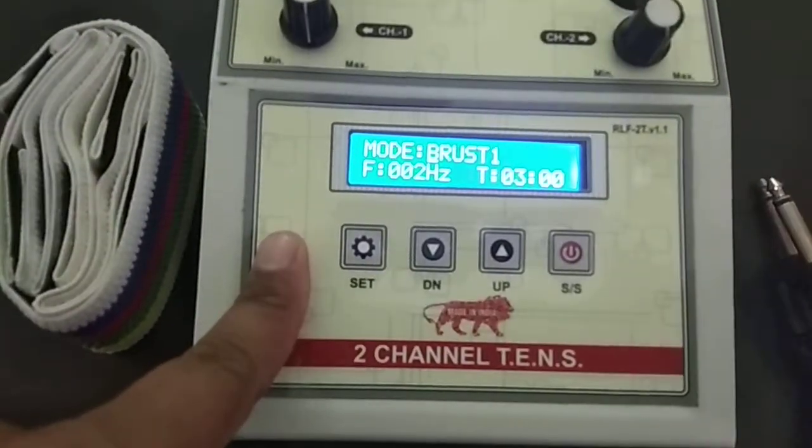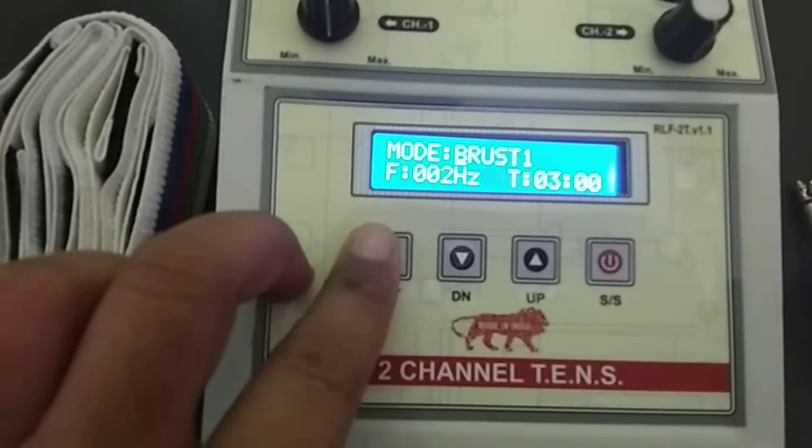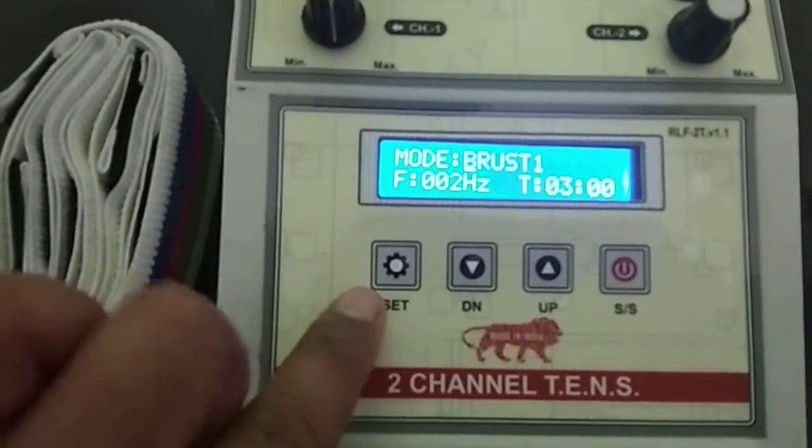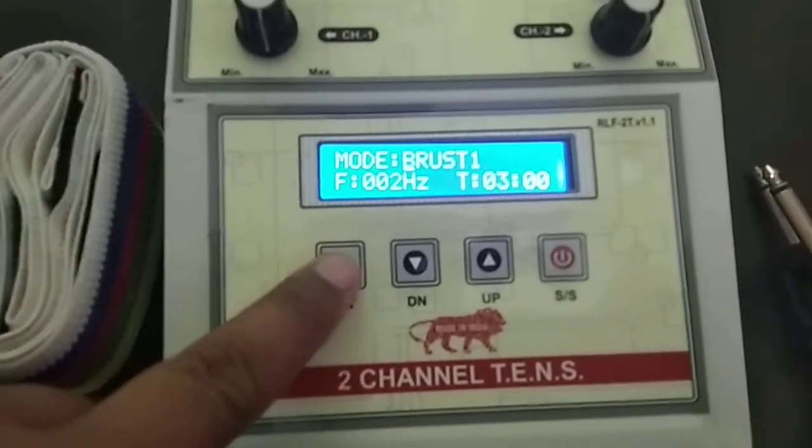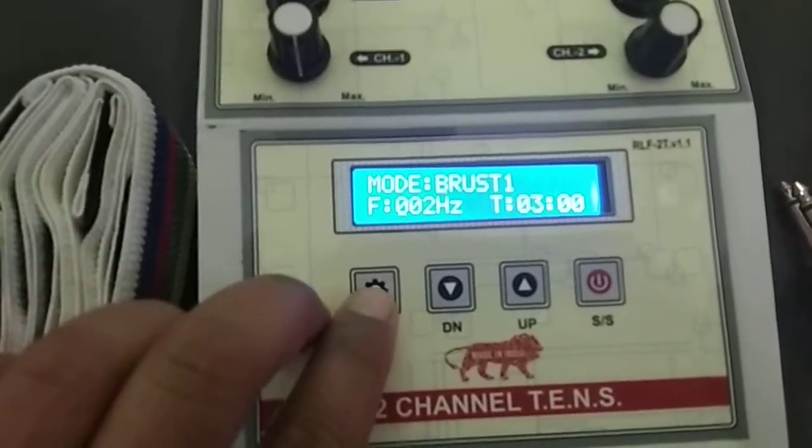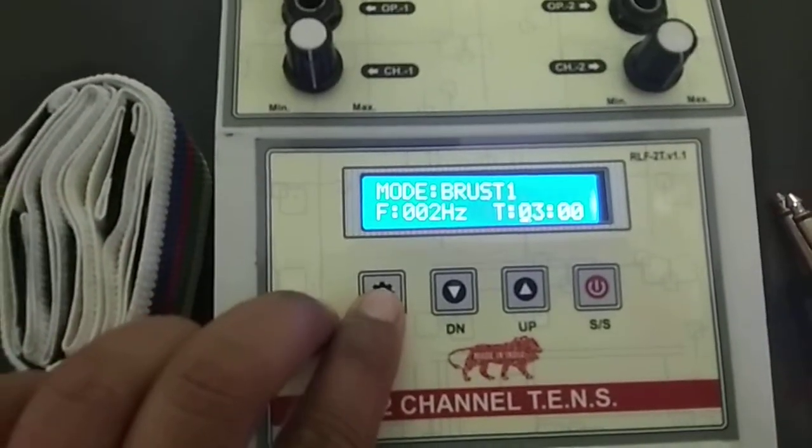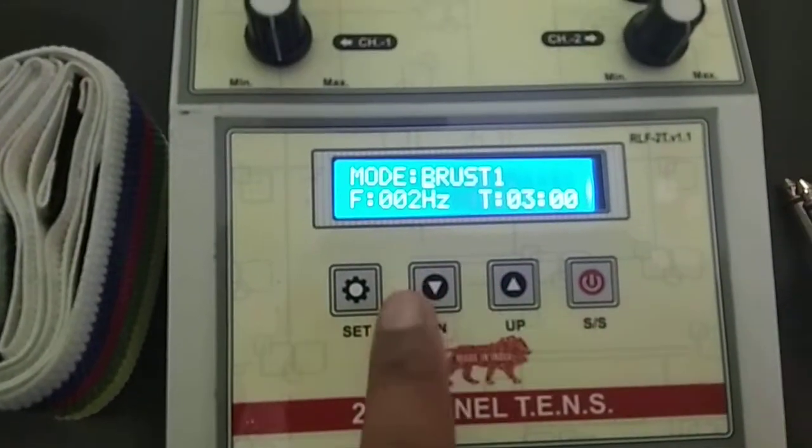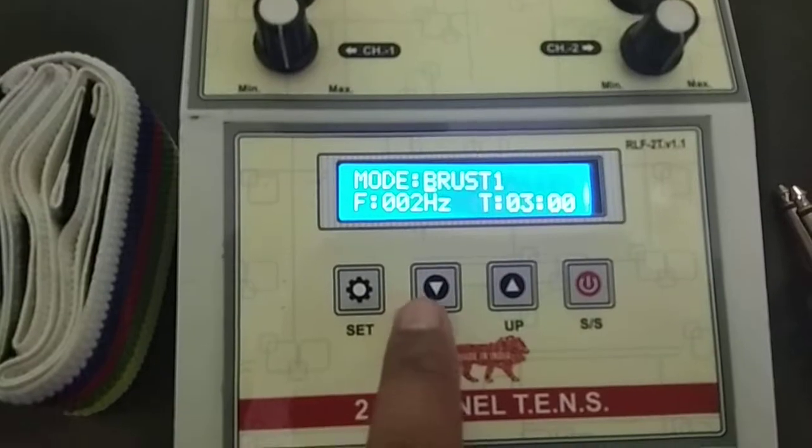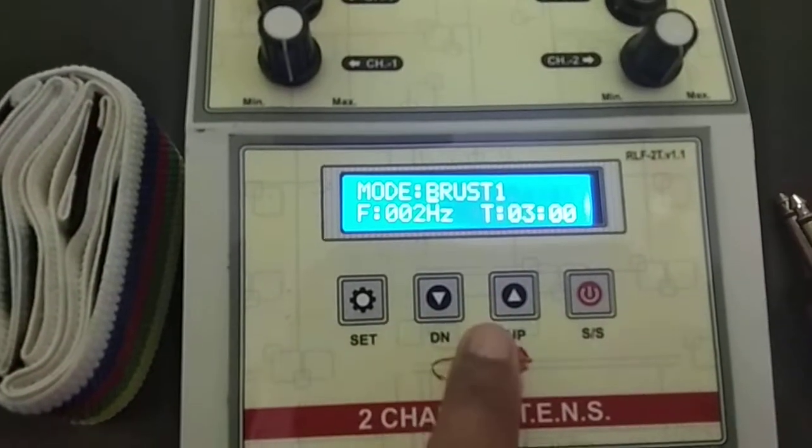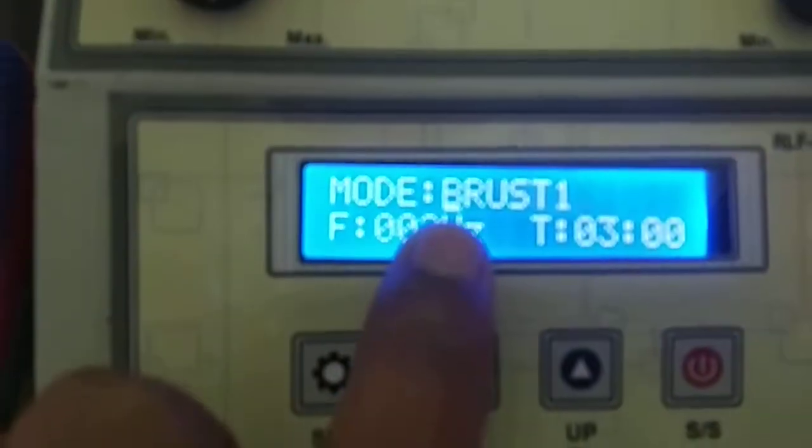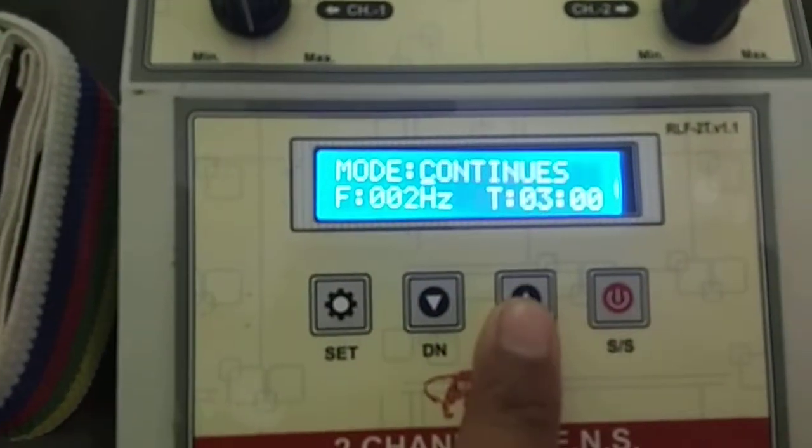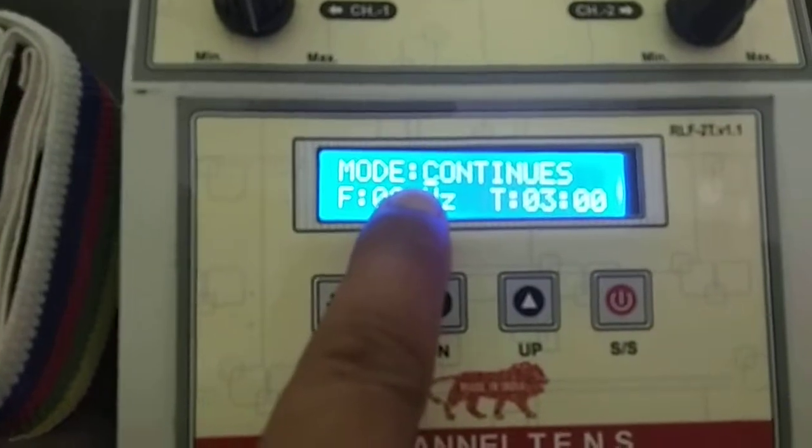For operating any programs, first of all you have to choose the mode by pressing setting key. And when the cursor is on content, then you can select by pressing these two keys. Now the cursor is on burst 1 mode, so I am selecting any one program. I selected continuous.